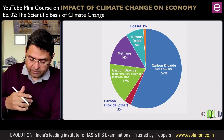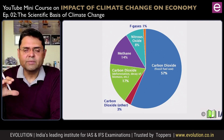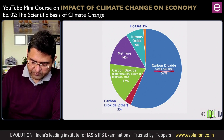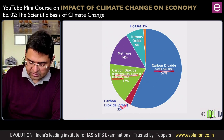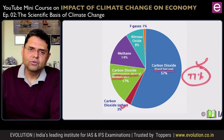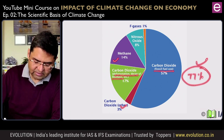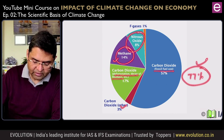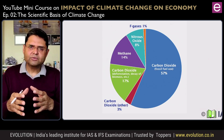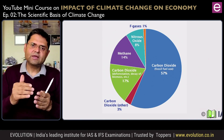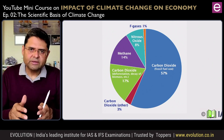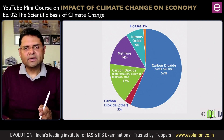Looking at the contribution of different greenhouse gases, carbon dioxide takes the lion's share. Carbon dioxide from fossil fuel use, deforestation, decay of biomass and other sources together accounts for 77% of total greenhouse effect. Methane is the second largest contributor at 14%. Nitrous oxide is next, and F-gases at present have a very small contribution. However, since individual F-gases are very potent greenhouse gases — their warming potential can be up to 1000 times or even greater than carbon dioxide — cutting down F-gas emissions right from the beginning will be much better for climate change control.